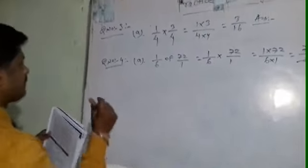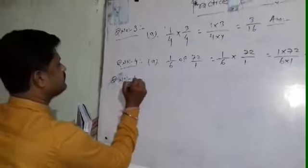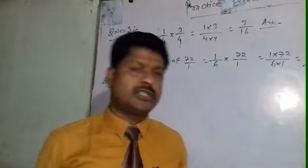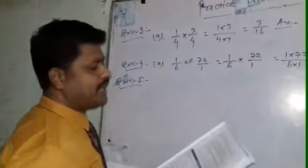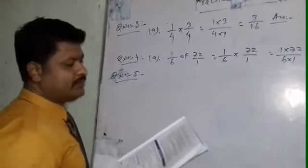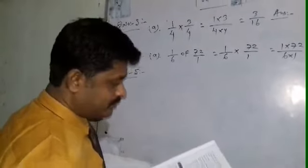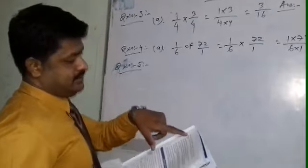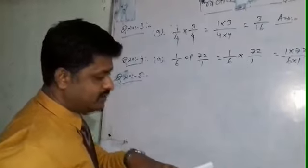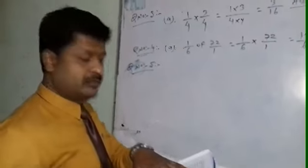Question number 5 is a subjective question on multiplication. Mrs. Mehra gave 1 by 3 of 90 lakh to her daughter, 1 by 5 to her grandson, and the remaining to her sister. If you have your book, open it and read question number 5 with me to get your answer. Mrs. Mehra has 90 lakh as her total share and she gives 1 by 3 of 90 lakh to her daughter.